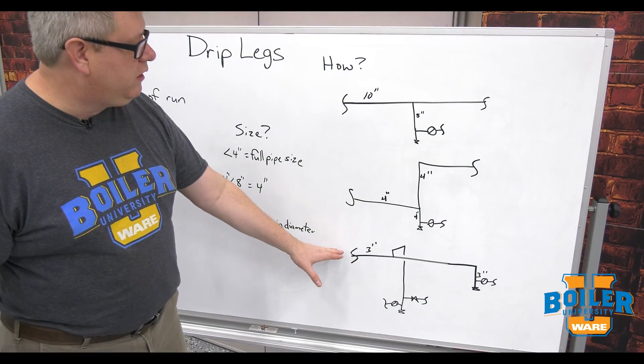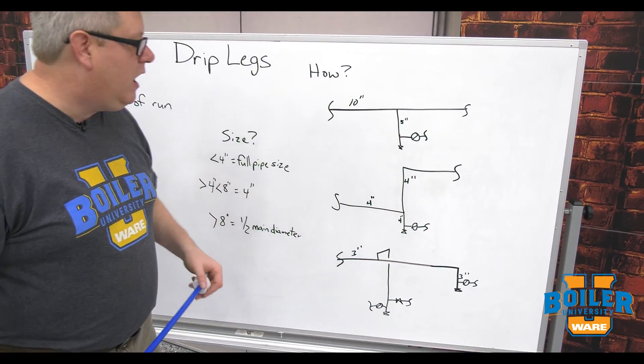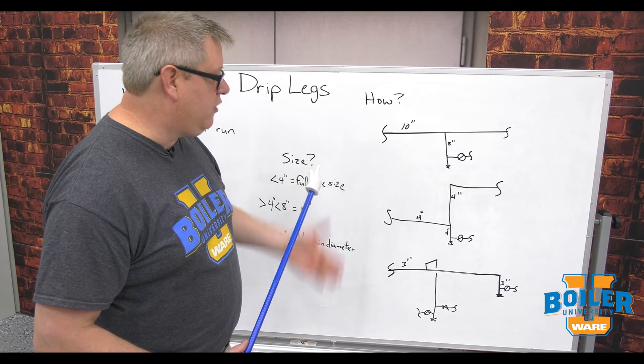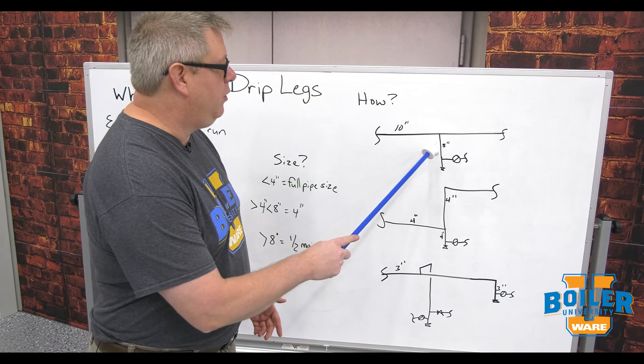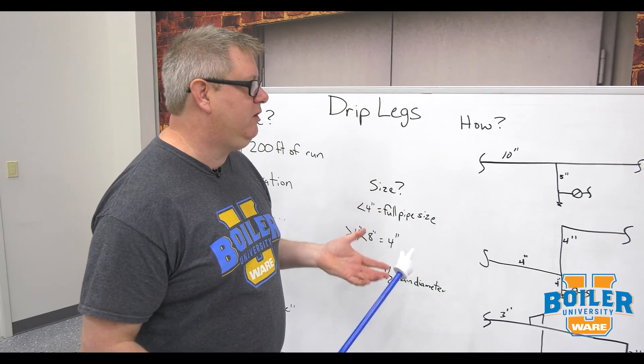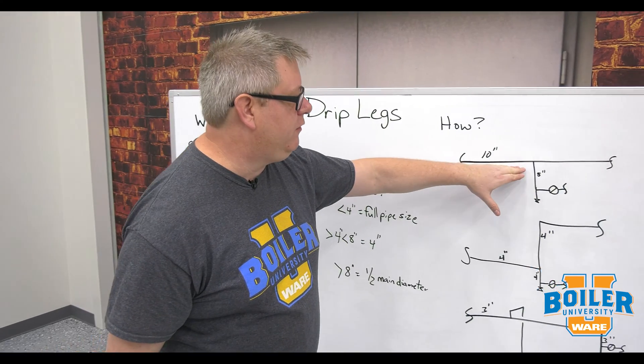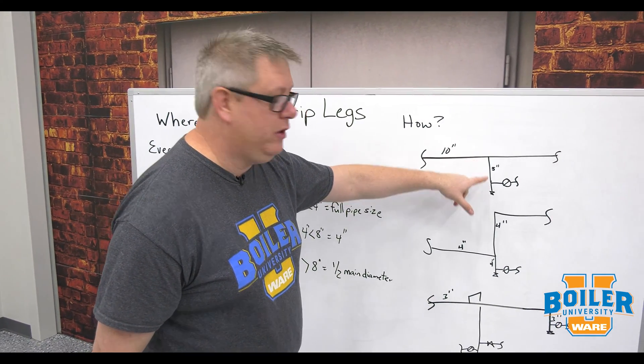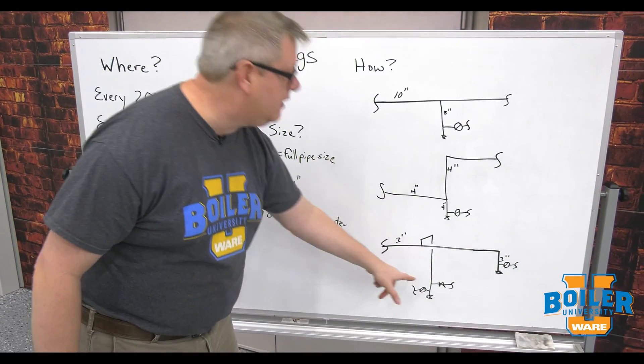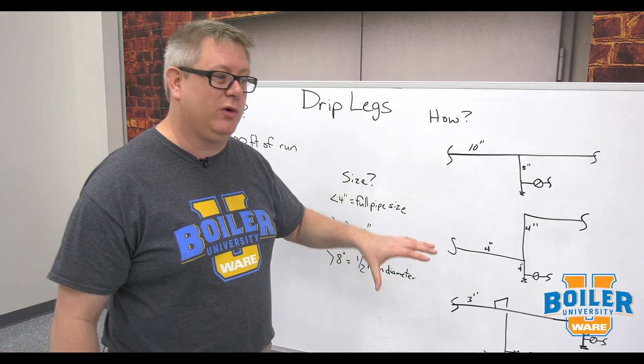We're taking a drop off to a piece of equipment. One tendency when somebody's making a drop to a piece of equipment is to pull off the bottom of the steam line because it requires the least amount of fittings and welds. But you can see from this example that's how you put a drip leg on a main. If we pull off the bottom of the pipe, we're going to get all the condensate because we're creating a drip leg, but it's going to go into our equipment.